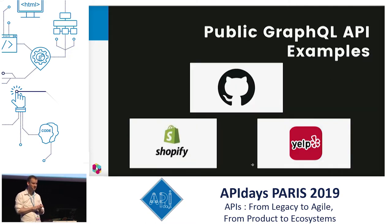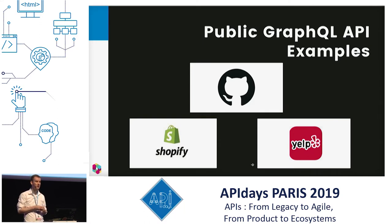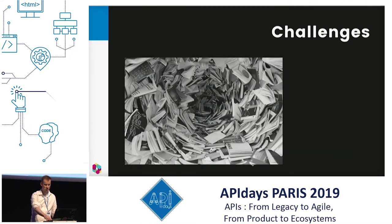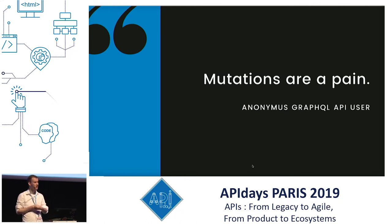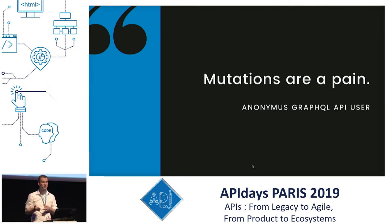It is possible — there are quite a number of companies with public GraphQL APIs: GitHub, Shopify, Yelp, and more coming with beta releases. But there are real challenges to tackle. One that comes up a lot is that mutations are a pain, especially for server-to-server communication. Developers used to REST find mutations boilerplate and harder to implement compared to simple HTTP requests.